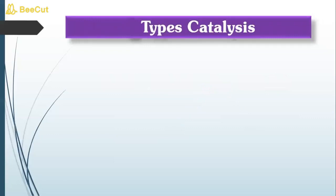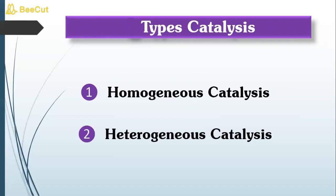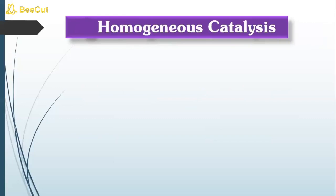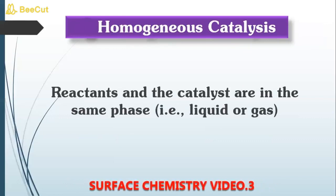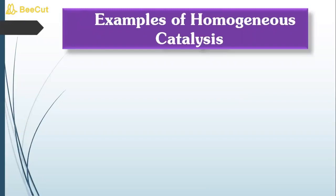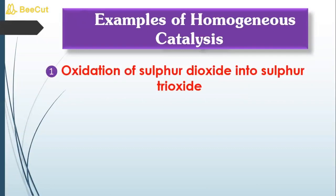There are two types of catalysis: homogeneous catalysis and heterogeneous catalysis. In homogeneous catalysis, 'homo' stands for 'same' — if all the reactants and the catalyst are present in the same phase, it is called homogeneous catalysis. The first example is the oxidation of sulfur dioxide into sulfur trioxide, where sulfur dioxide and oxygen are in the gaseous phase and the catalyst nitric oxide (NO) is also a gas.